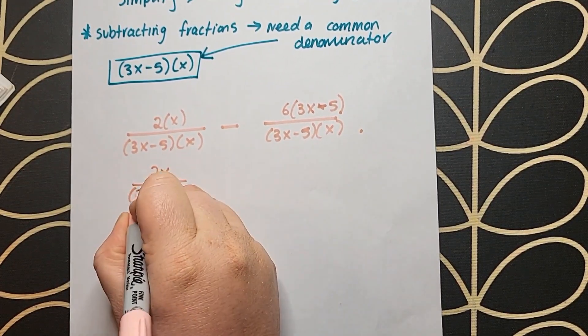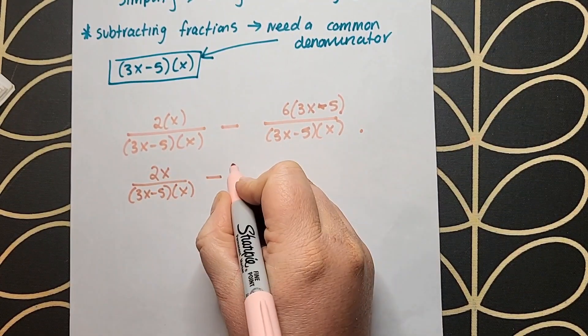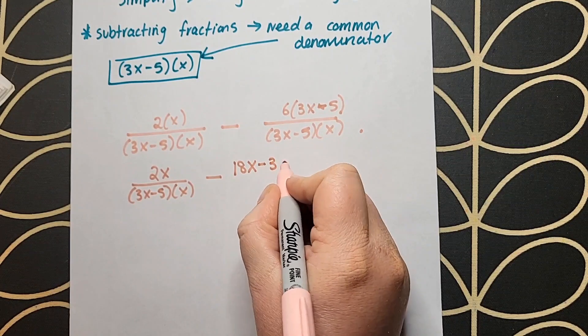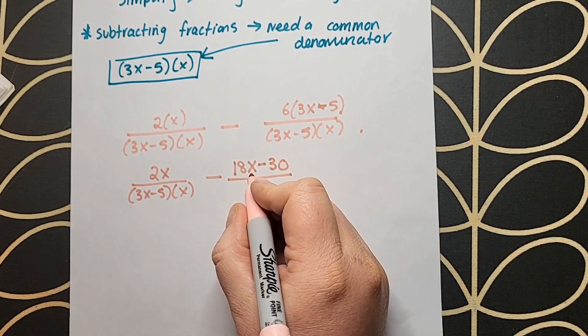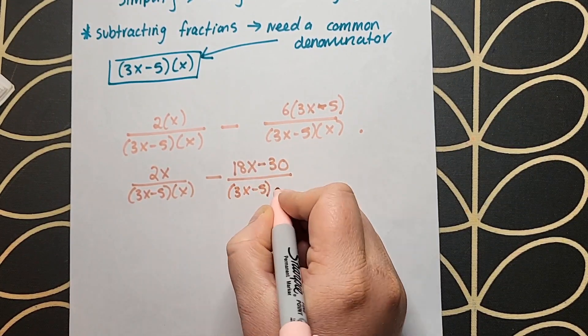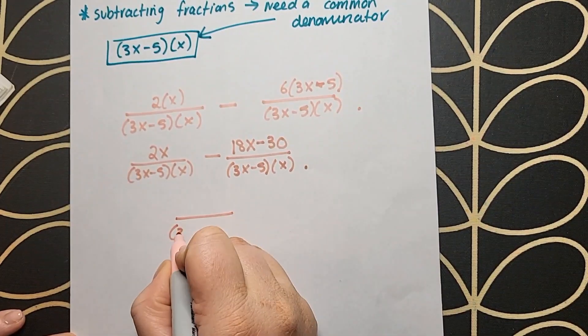I am changing from (3x - 5) to (3x - 5) by x on the bottom, which means I multiply that 2 at the top by x. On the right hand side, I am going from an x in the denominator to (3x - 5) by x, so that means I multiply the top, the 6, by (3x - 5).